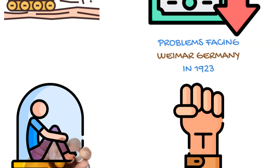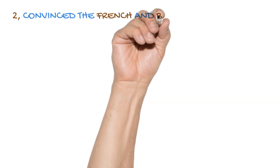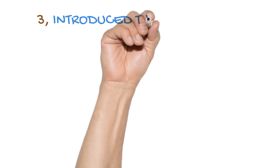Clearly Stresemann was going to have his work cut out in trying to solve these serious problems. One of his first actions was to call off the campaign of passive resistance in the Ruhr Valley that the workers had been following in order to frustrate the French and Belgians. In doing so, Stresemann was able to get Germany's biggest industrial area producing again. More than this, by promising the French and Belgians that Germany would restart her reparations payments, he was able to convince them to leave Germany.